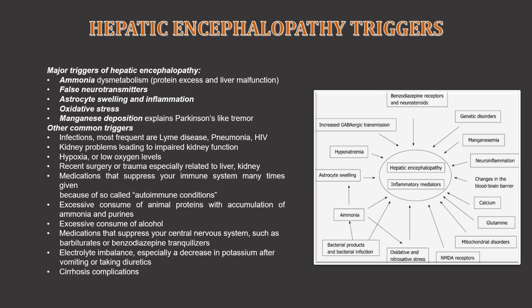Additional triggers include medications that suppress your immune system, often given for so-called autoimmune conditions; excessive consumption of animal proteins with accumulation of ammonia and purines; excessive consumption of alcohol; medications that suppress your central nervous system such as barbiturates or benzodiazepine tranquilizers; electrolyte imbalances, especially a decrease in potassium after vomiting or taking diuretics; as well as cirrhosis complications.